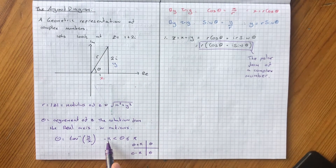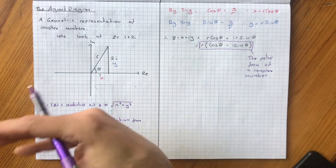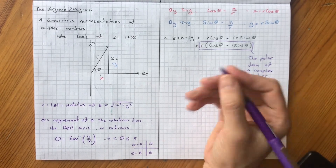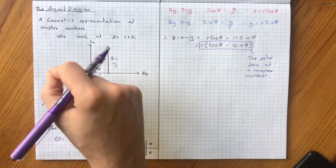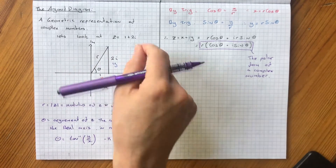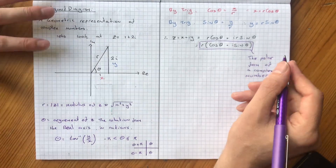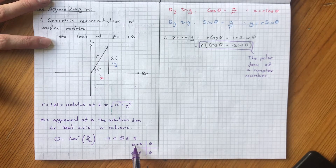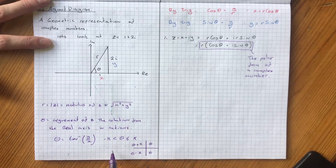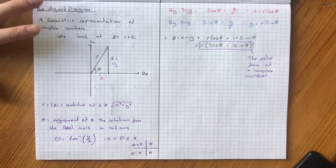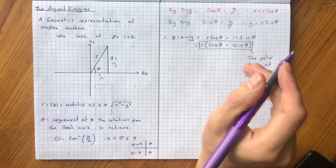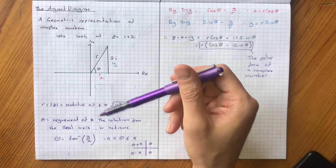The angle always being between negative pi and pi, so if you end up with an argument that is bigger or outside that range you need to add or subtract 2pi until you get within that range, as this takes into consideration infinite amounts of rotations around the Argand diagram. If we're in the first quadrant or the fourth quadrant, simply finding theta the regular way will give it to us. If it's in the second quadrant it is theta plus pi, and when it is in the third quadrant it is theta minus pi.